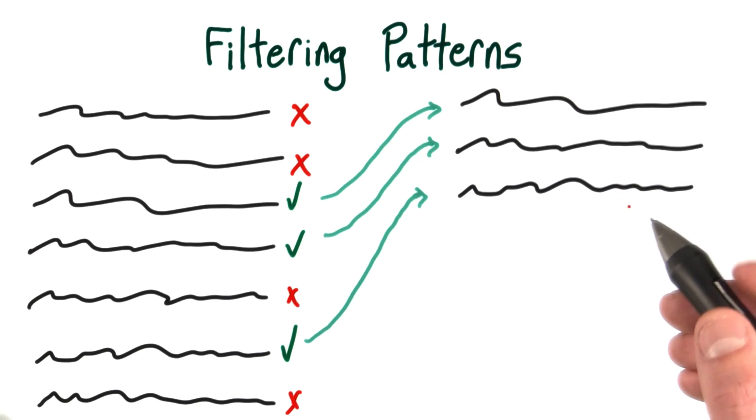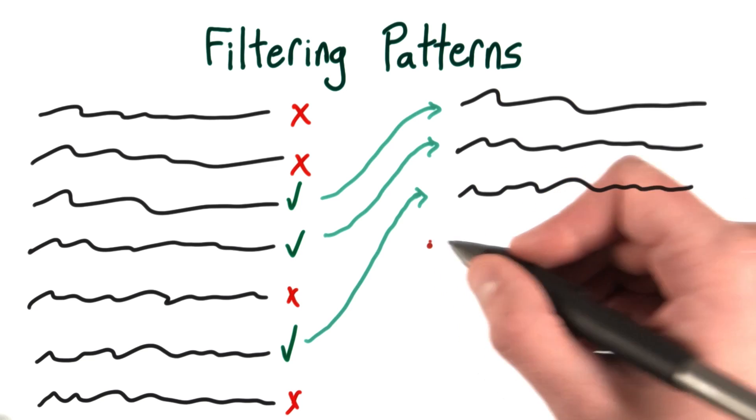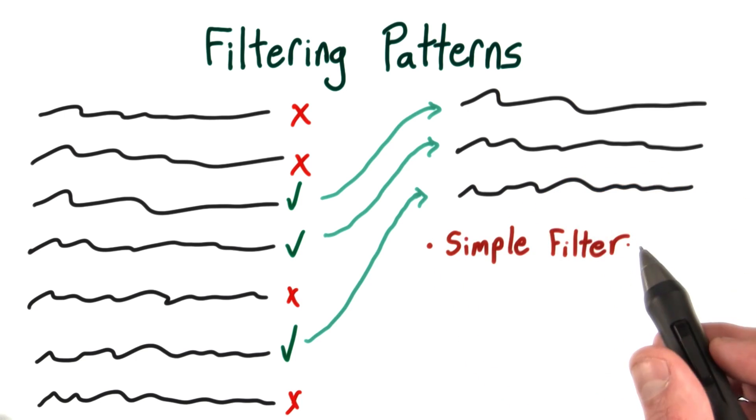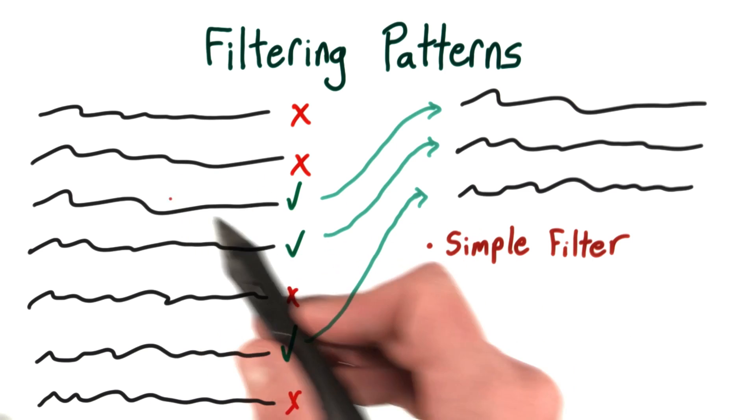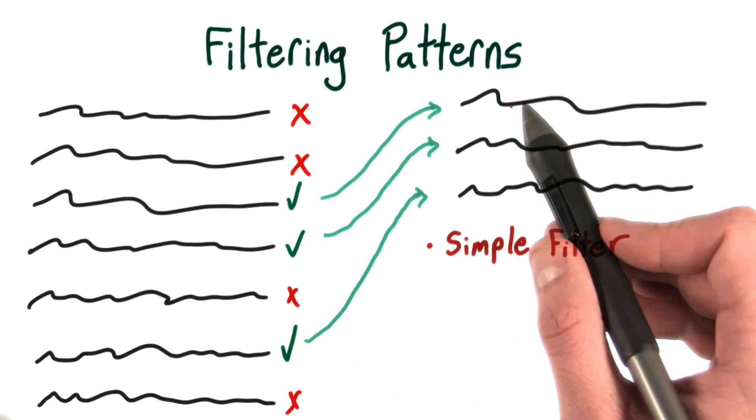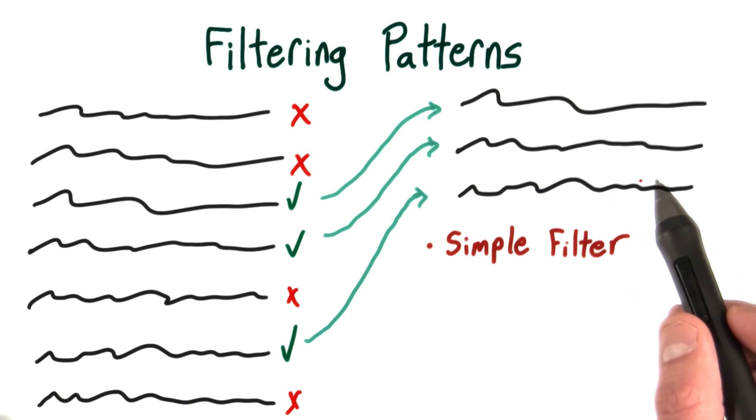There are a lot of ways filtering can happen. We can have a simple filter, which is basically just a function that returns 'keep' or 'throw away' for each of these records. And for the records that get kept, they wind up in the output.